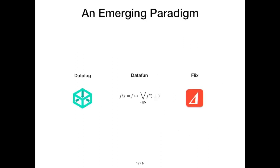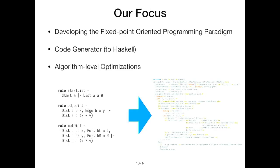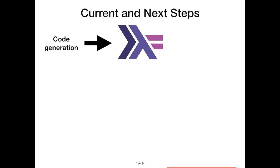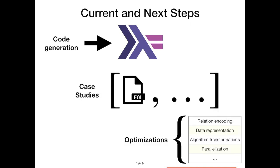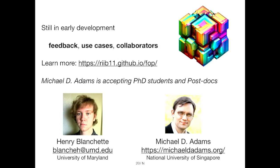We're not the first project in this space. There are other projects in this emerging paradigm — for example, Datalog, Datafun, and Flix. But those other projects are implemented as new languages, whereas our focus is on code generation for Haskell and doing optimizations on that transpilation. Our current steps are moving from our existing interpreter to a fully-fledged code generator, implementing case studies, and encoding optimizations into the transpilation. We're still early in development and looking for feedback, use cases, and collaborators. For example, there are fixed-point computations in GHC like strictness analysis that would be good starting use cases. If you're interested, check out our website or talk to us here at the conference.